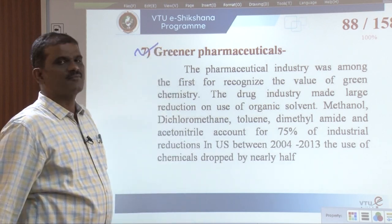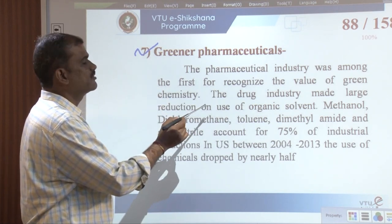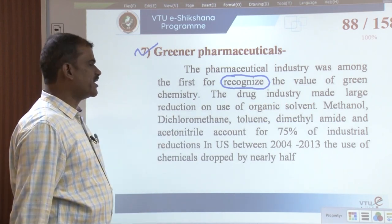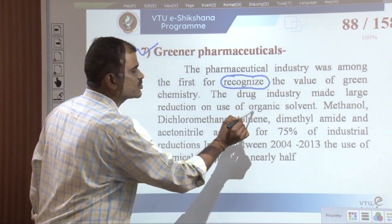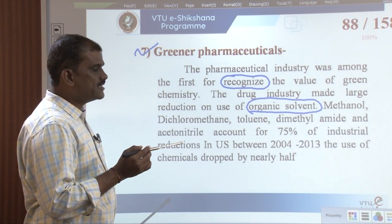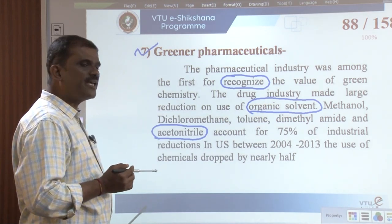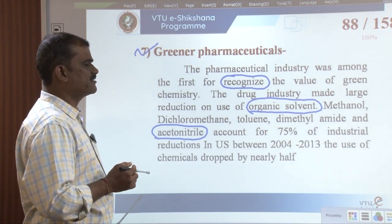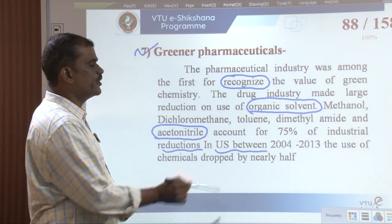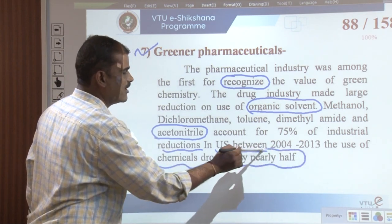Regarding greener pharmaceuticals, the pharmaceutical industry was the first among other industries to recognize the value of green chemistry. The drug industry made large reductions in the use of organic solvents — methanol, dichloromethane, toluene, dimethylamine, and acetonitrile required for various syntheses have been minimized. It was observed that 75% of industrial reduction in the US occurred during 2004 to 2013, with the use of chemicals dropping by nearly 50%.